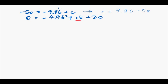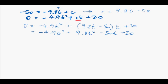0 equals negative 4.9t squared plus, now, c we know is 9.8t minus 50, times t plus 20. Oh, look. Now, we've got an equation just on t, which is really encouraging. 0 equals negative 4.9t squared plus 9.8t minus 50t plus 20. Great. That is something that you can solve. And when you do solve it on your calculator, you'll see that you'll get 0.41 or 9.79.